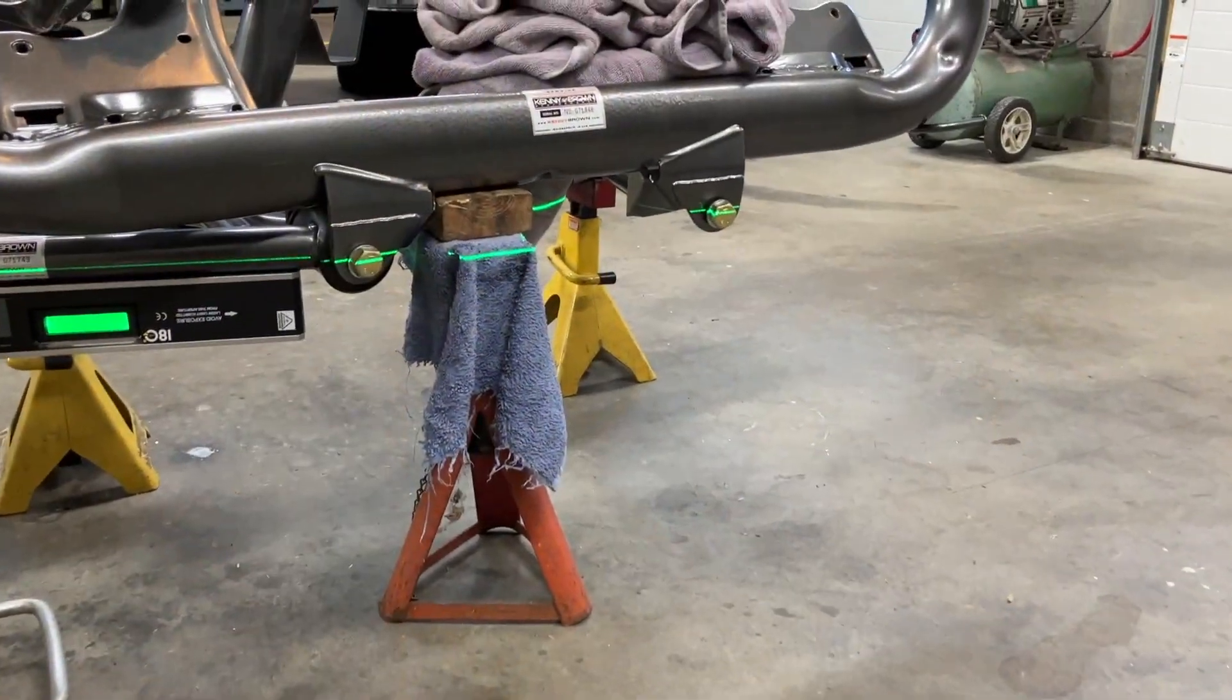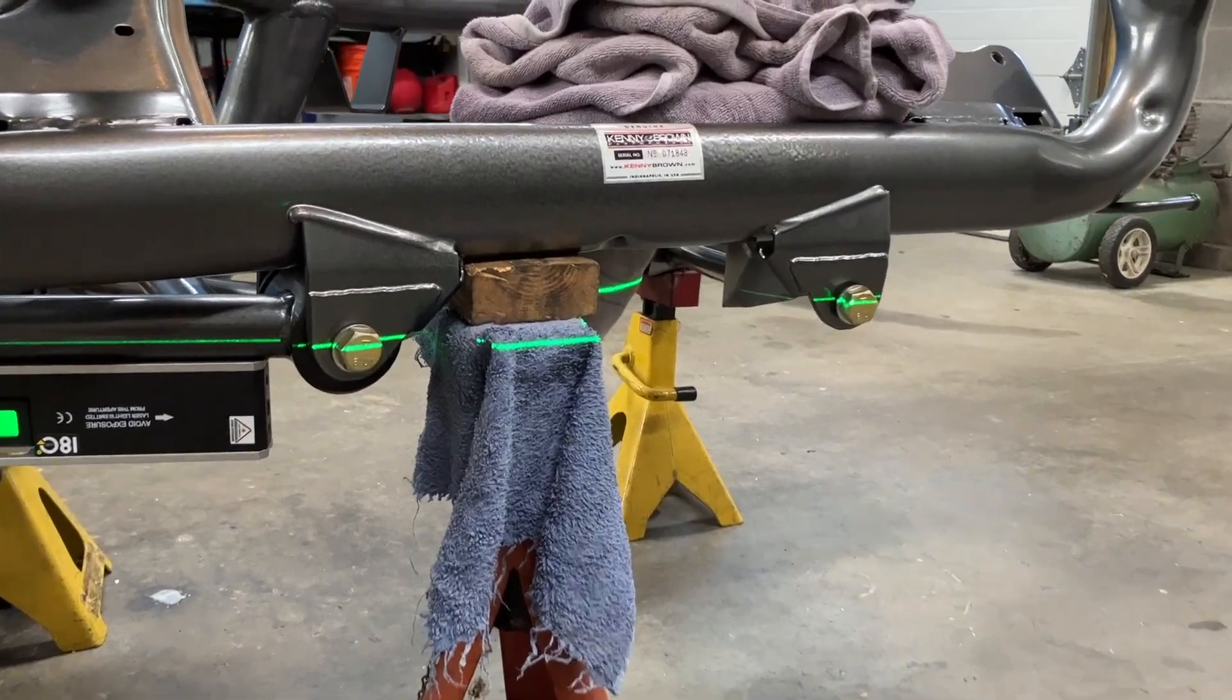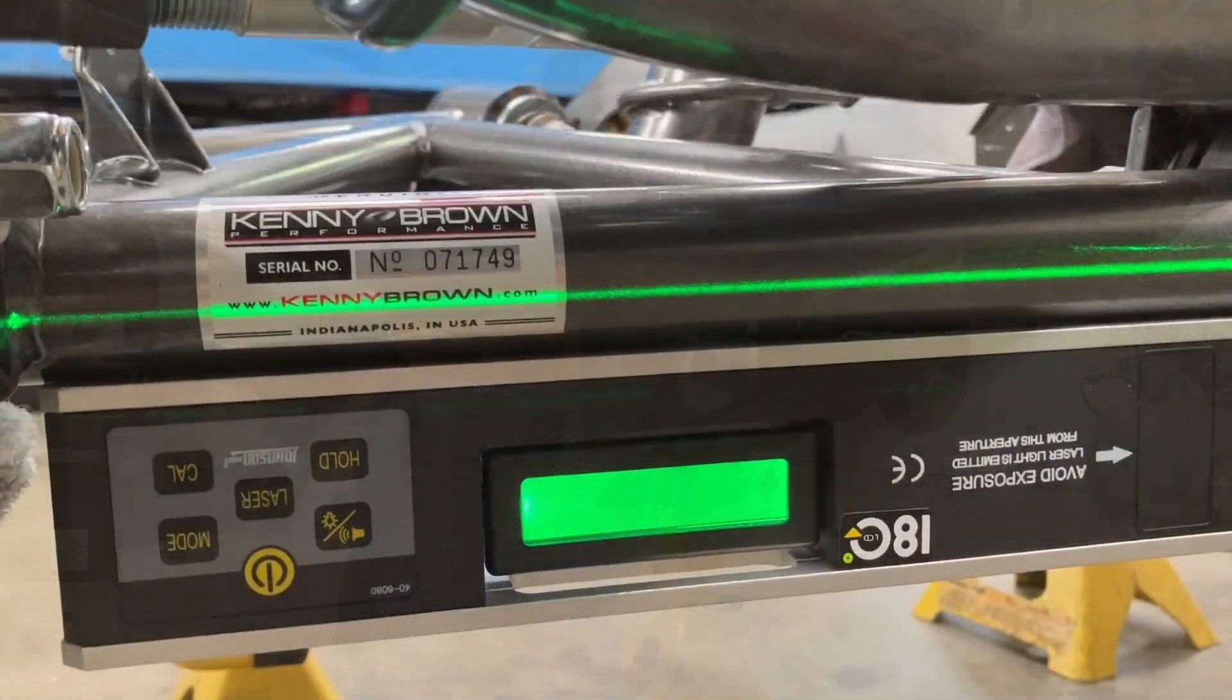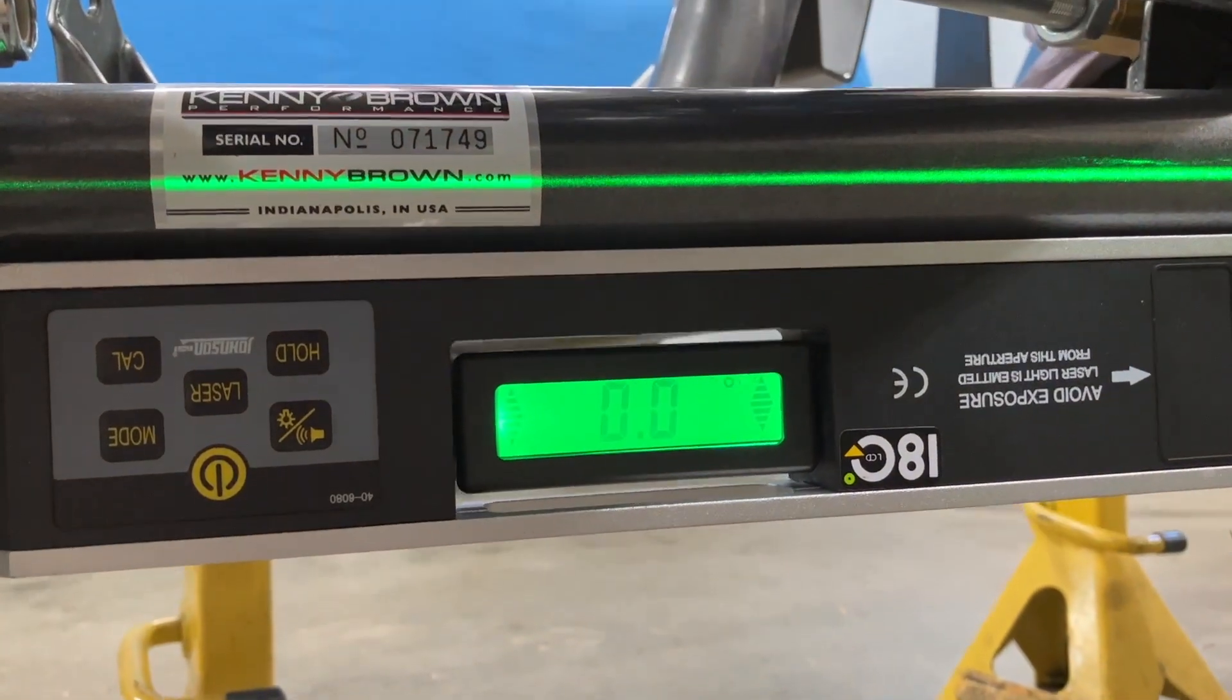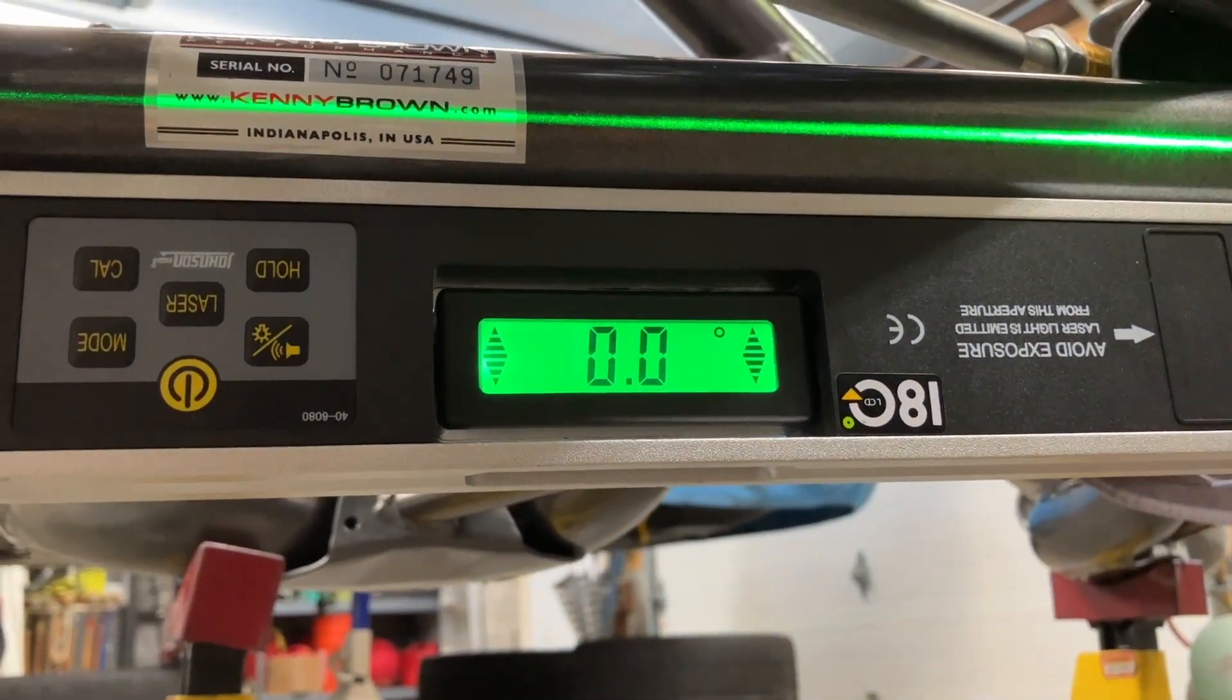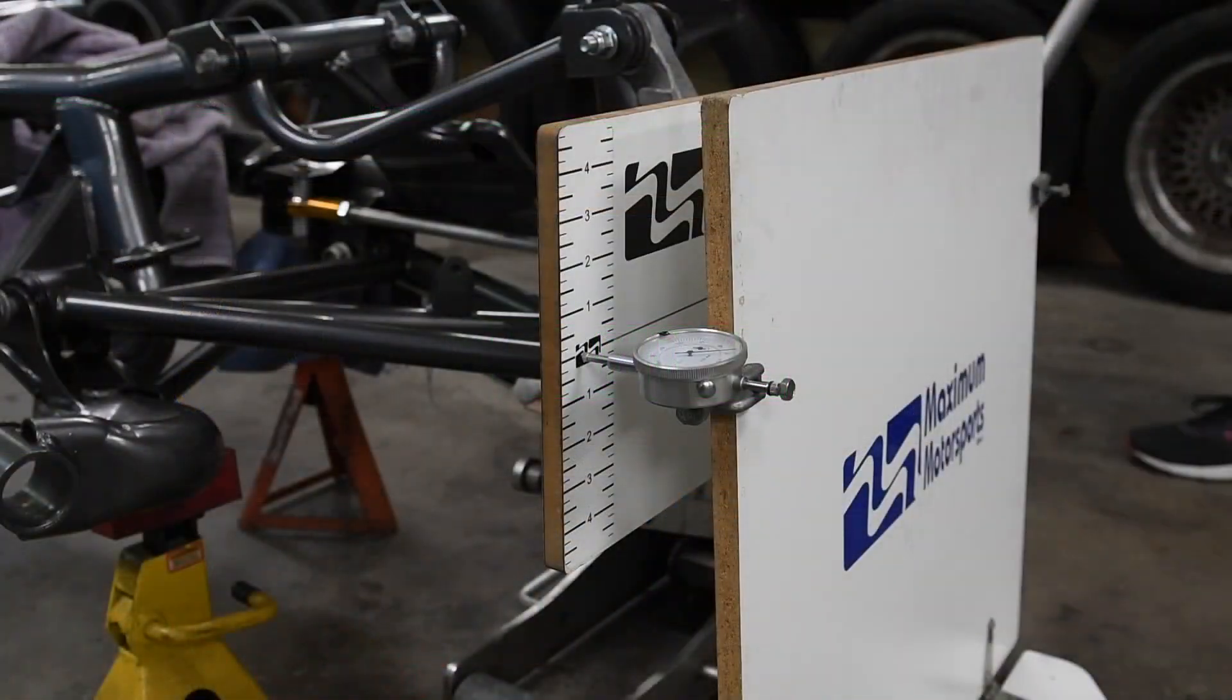First, you'll want to make your reference point, or zero hub position, ride height. Since the suspension is out of this car, we'll just set our zero hub position to when the lower control arm is level. Set the rest of the gauge up per the Maximum Motorsports instructions. They're pretty good, so just follow them.